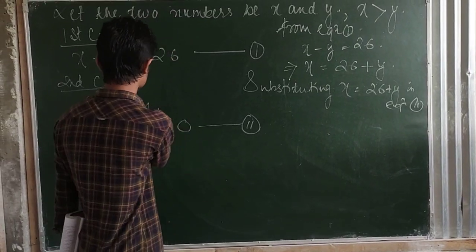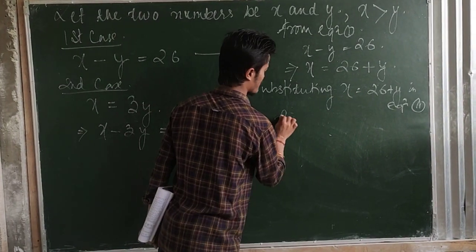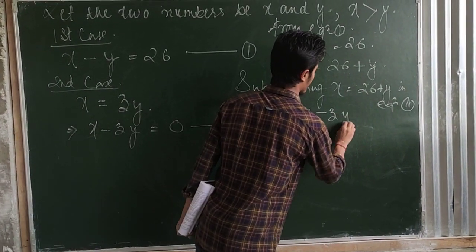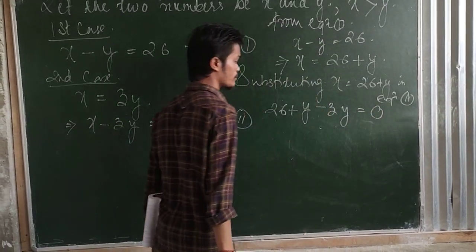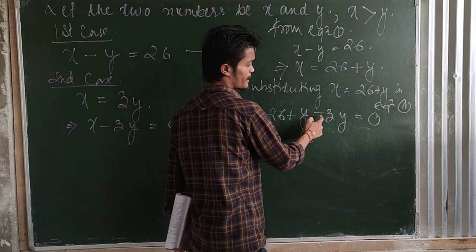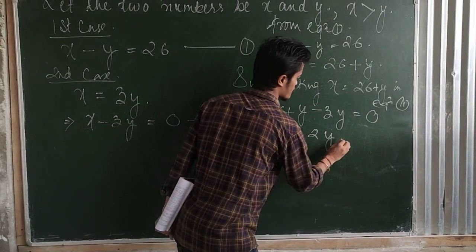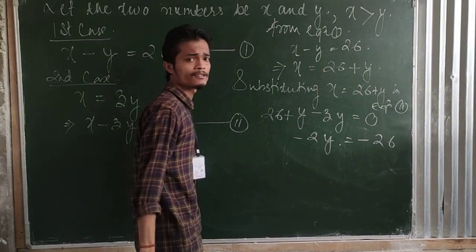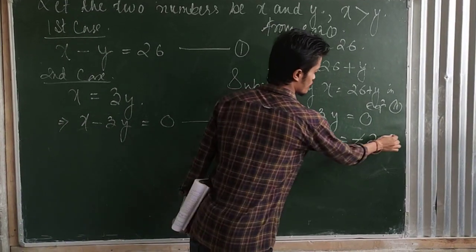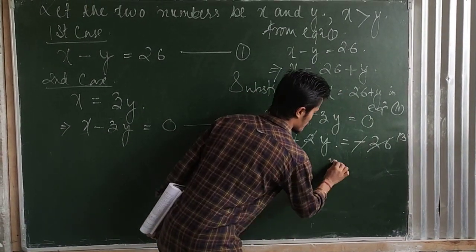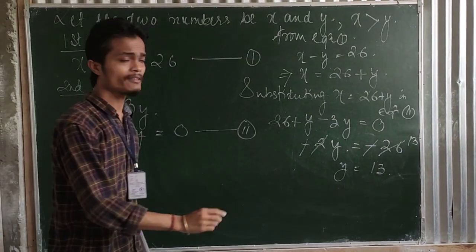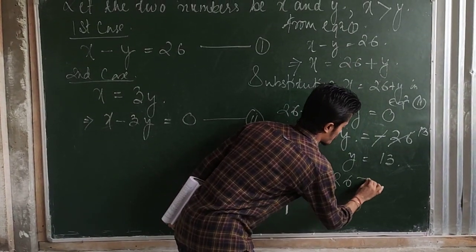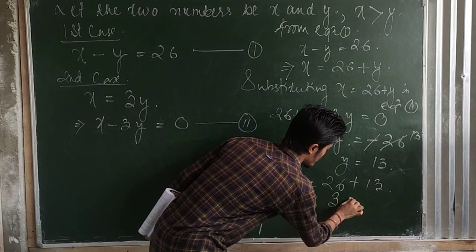Substituting x equals 26 plus y into equation 2: x minus 3y equals 0, so we replace x with 26 plus y to get 26 plus y minus 3y equals 0. Combining y terms: y minus 3y gives minus 2y. So minus 2y equals minus 26, which means y equals 13. Then x equals 26 plus y, so x equals 26 plus 13, giving x equals 39.